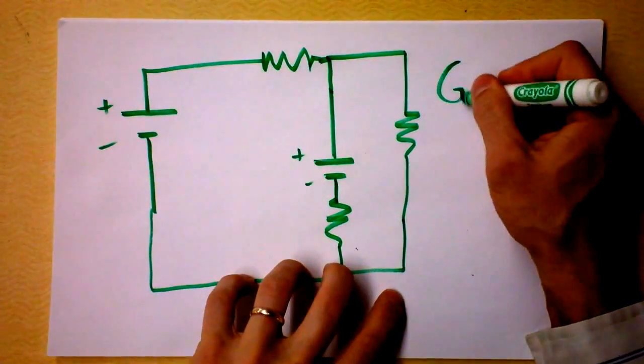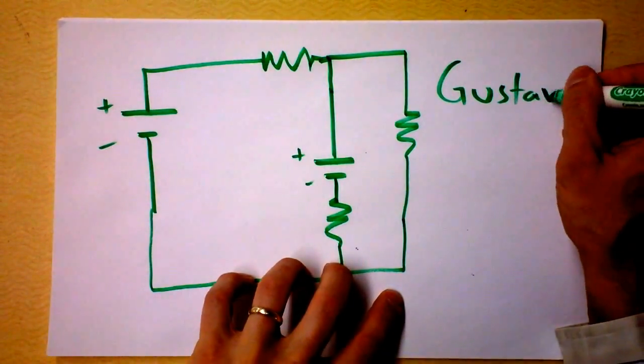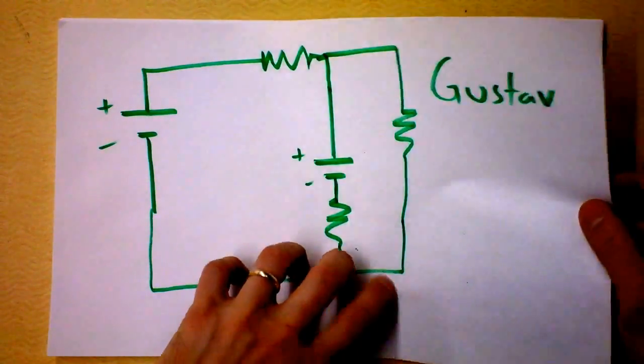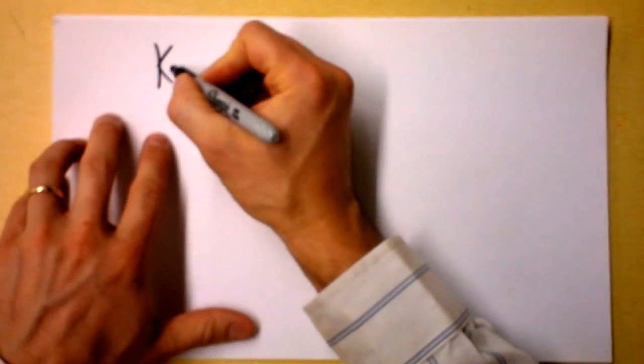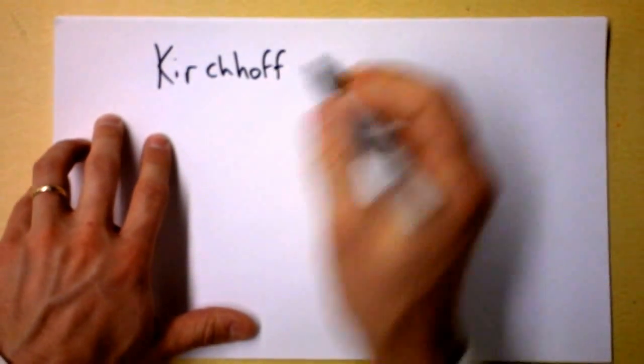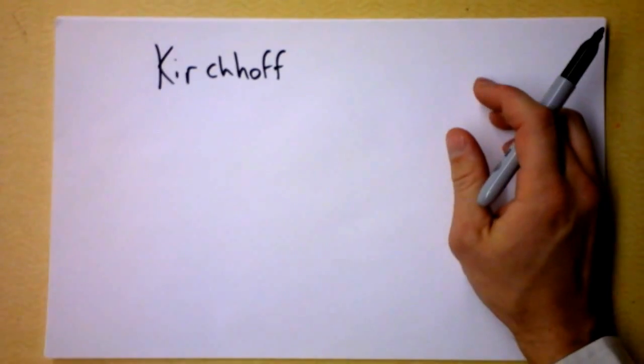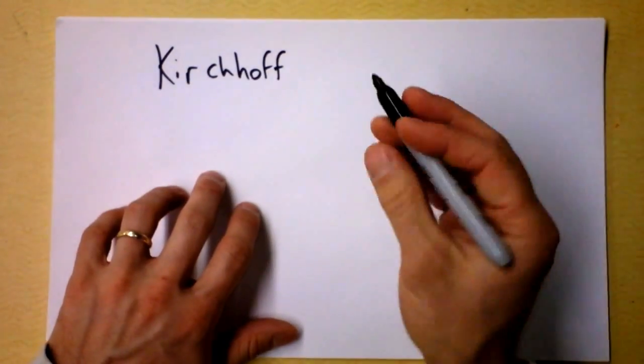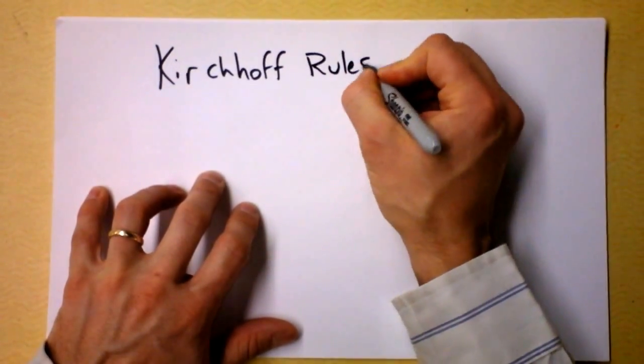So for that you need Gustav, or as we call him, Gustav Kirchhoff. Kirchhoff's laws are statements of, well, I'm not going to let you use them until you understand what they are. This guy in the 1800s was thinking about circuits a lot and he came up with these two rules.